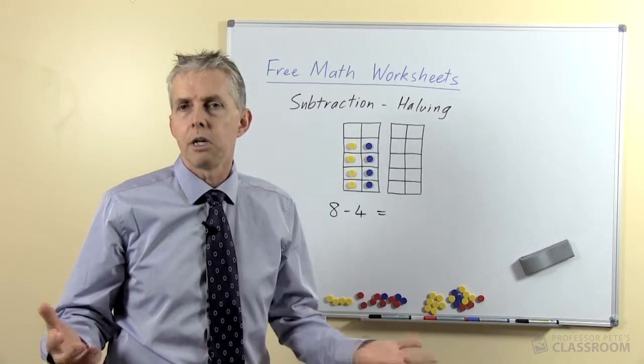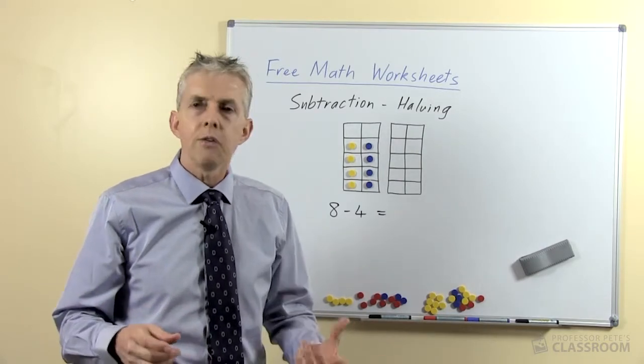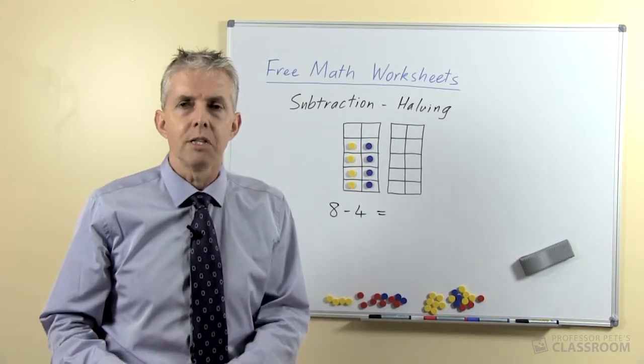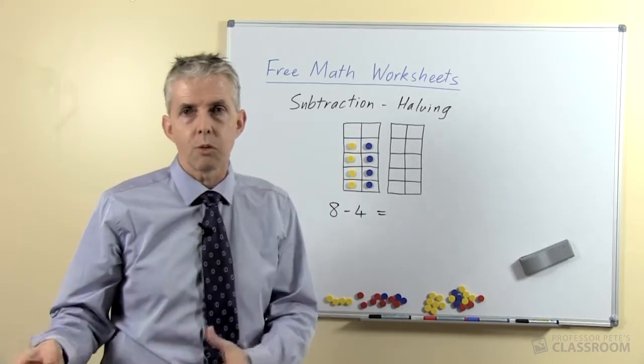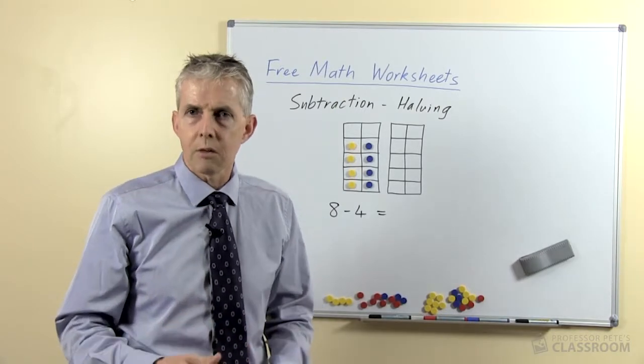So if we think of a question like 12 take away 6, the only way you're really going to know that's a halving question is if you already know that double 6 is 12 and so in a sense you already know the answer without thinking about it.